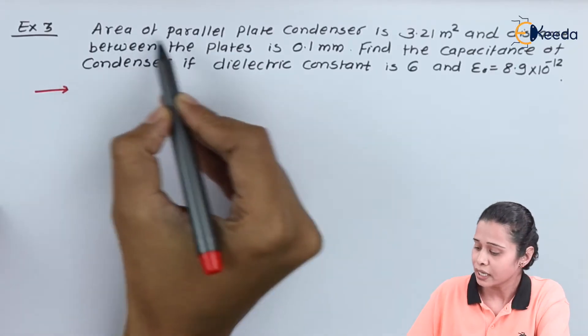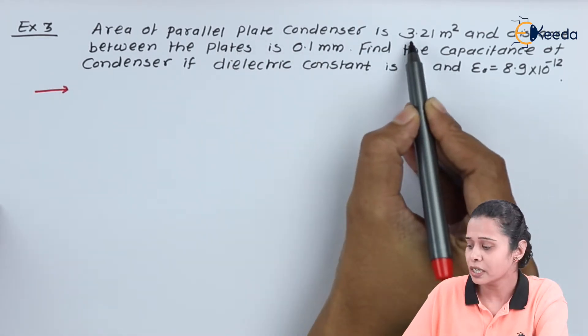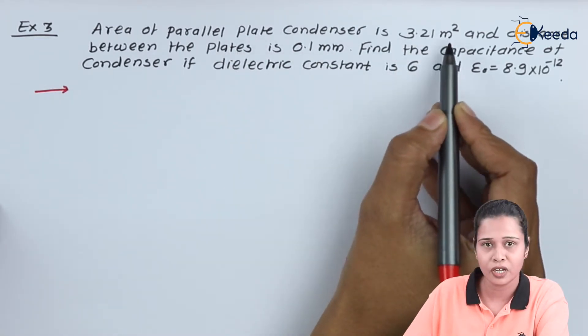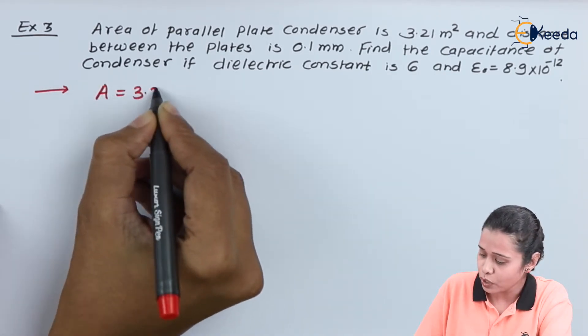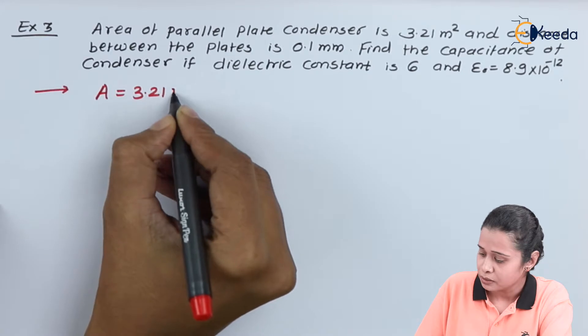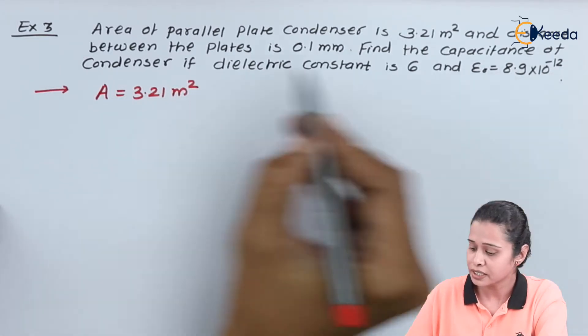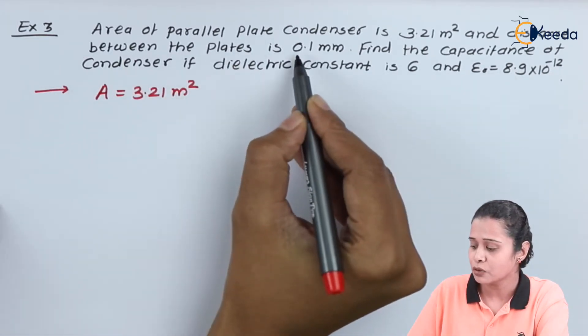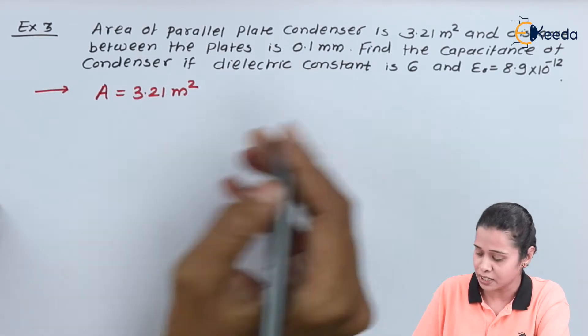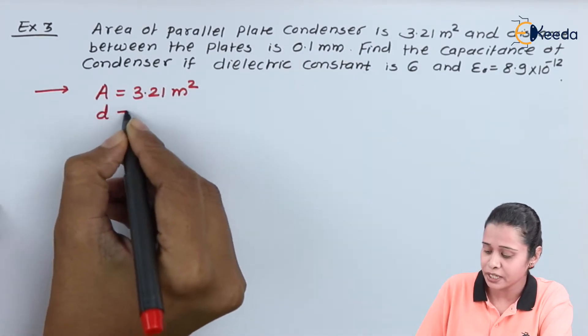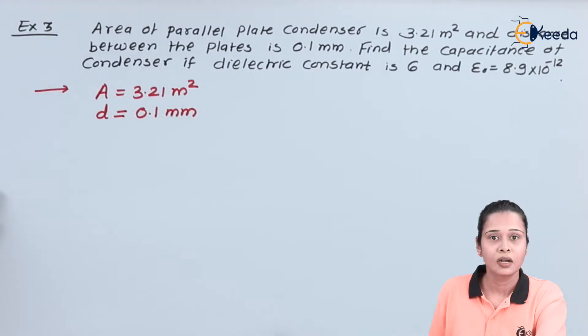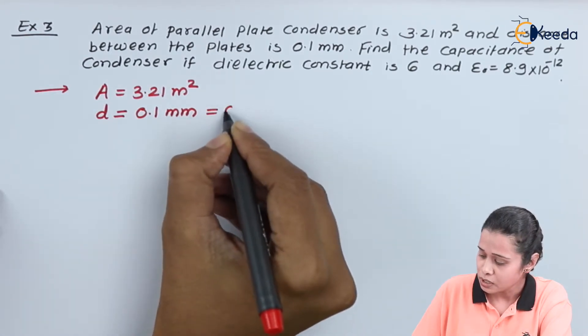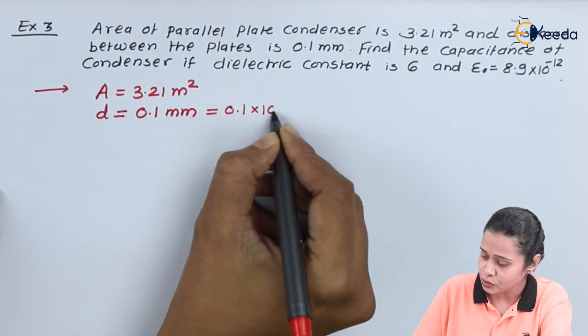Now area of parallel plate condenser is 3.21 meter square, so A is equal to 3.21 meter square. And the distance between the plates is 0.1 millimeter. Let us convert this distance into meters, so 0.1 into 10 raise to minus 3 meters.